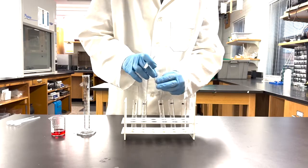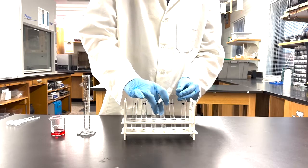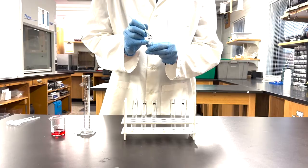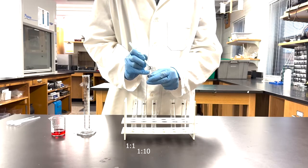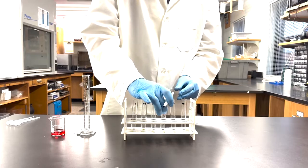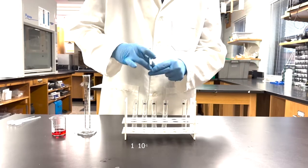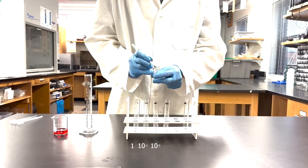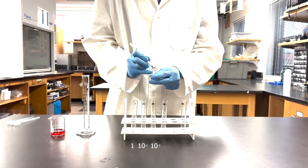Label each tube in the series with the concentration it will contain. These can be noted as a ratio such as 1 to 1, 1 to 10, or 1 to 100. Or they can be noted as scientific notation: 1, 10 to the negative 1, 10 to the negative 2, etc.